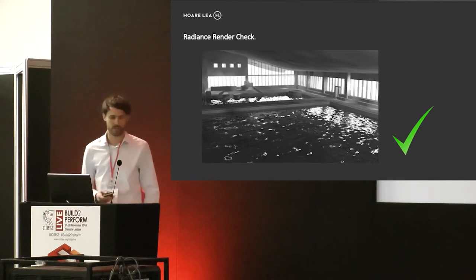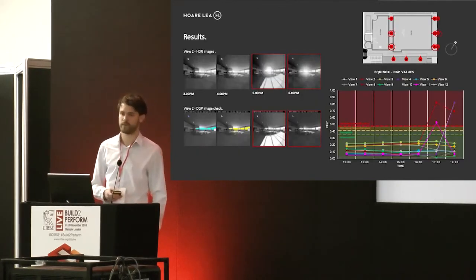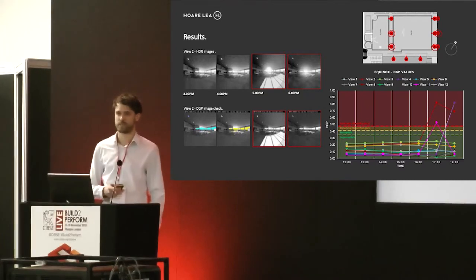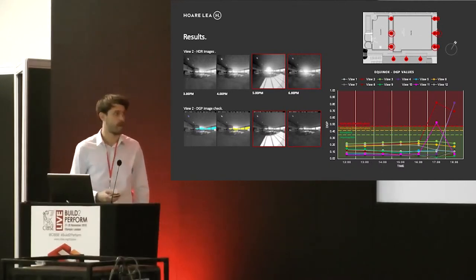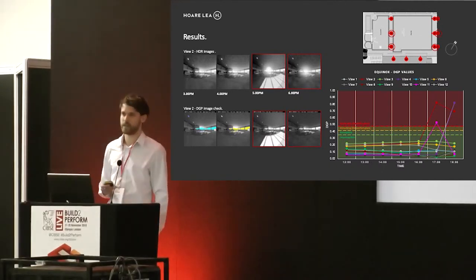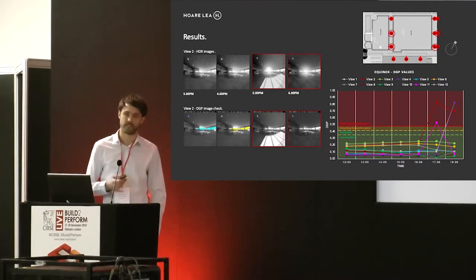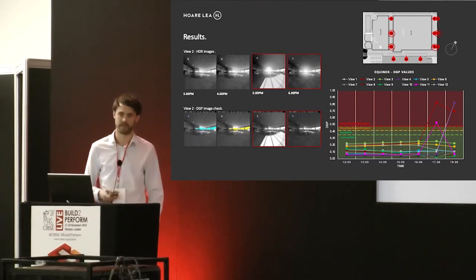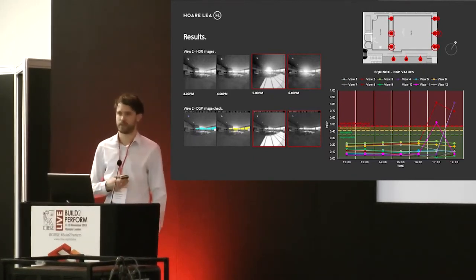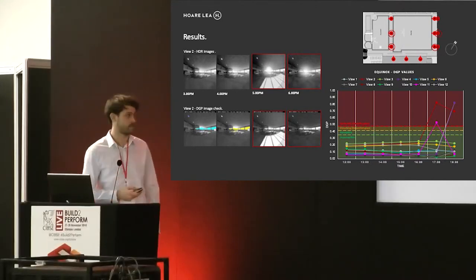For the results, for each of the 12 positions we ran, we rendered HDR images for several times across summer solstice, winter solstice, and equinox. These images were then run through EvalGlare, which gives us the DGP value. The advantage of this is that you can render several times and positions and analyze the data much more quickly using the numerical value as opposed to running through all the visualizations.